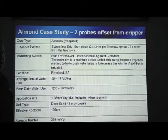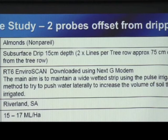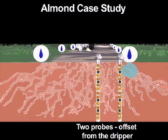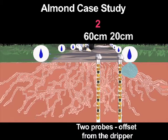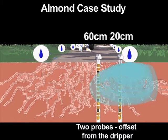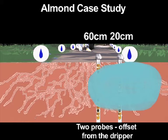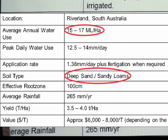The trial was in almonds, a non-pareil variety. There's a subsurface drip system with two dripper lines per row of trees and we installed two RT6 EnviroScan probes next to the drip line, one 20 centimetres from the dripper and one 60 centimetres from the dripper in an effort to measure the lateral spread when the grower was pulse irrigating. The average water use of almonds in the Riverland is approximately 15 megalitres per hectare and the soil types were deep sand, sandy loam soils, very typical of our Malley area.